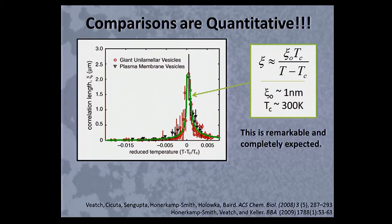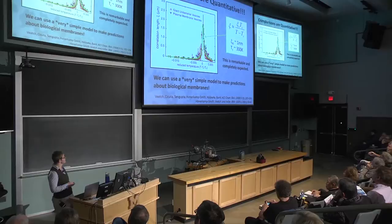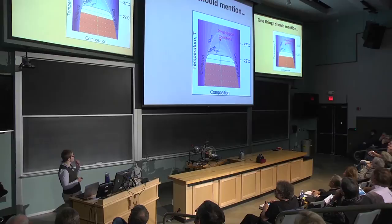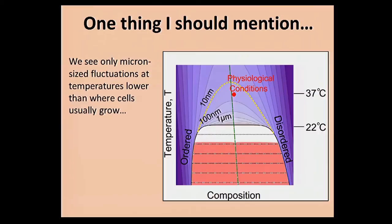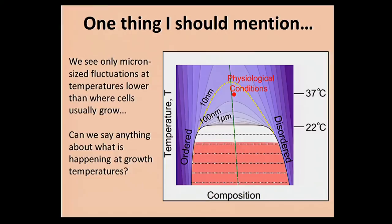We're on our way — in some cases at least, we have reason to believe we can use these simple physical models and principles to really make predictions about cells. One thing I should mention: we only see these fluctuations at low temperatures, mostly around room temperature, but these are mammalian cells that grow normally at 37 degrees. One of the big questions we get is: does this ever happen in reality? I think the answer is yes. The way we think about it is that the cell lives just above this phase transition, and because it's not so far away, it can feel the effects — and these effects have many facets to them.